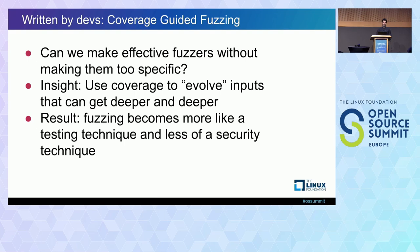So let's look at how fuzzing can be done by developers themselves. The technique that really allowed this is called coverage-guided fuzzing. Coverage-guided fuzzing is based on the insight that instead of teaching the fuzzer about the formats it's fuzzing, maybe the fuzzer could learn to produce interesting inputs that look like that format. This allows you to write fuzzers where you just point out the code you're targeting without investing in the mutator, as that's generic.